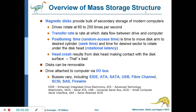Let us begin with an overview of mass storage structure. There are many mass storage structures we use in our daily lives — for example, hard disks, and even DVDs or CDs can be categorized as mass storage. Let us begin with magnetic disks.